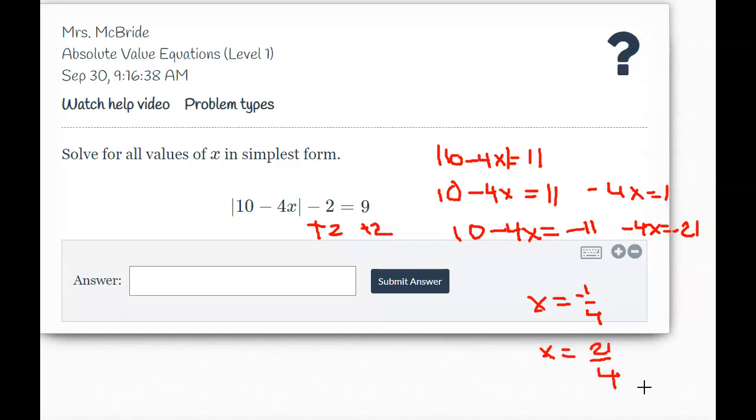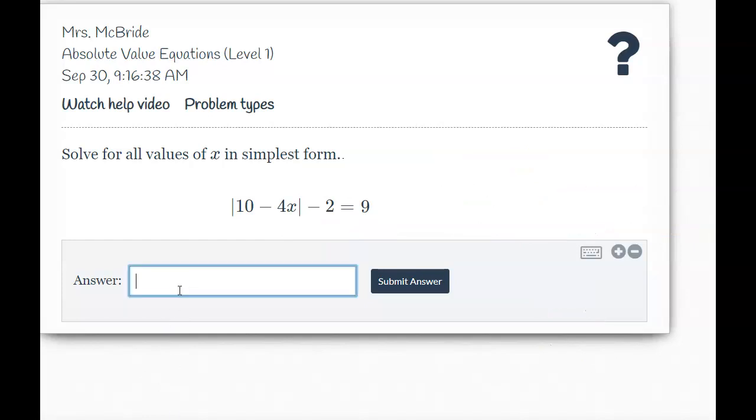So I'd quickly go back and just check these real quick to make sure I get an answer that works. So absolute value of 10 minus 4 times negative 1 fourth becomes 10 minus a minus, so they turn to a positive. The 4s cancel. You get a 1. So you get the absolute value of 11. So you get 11 minus 2 gives 9. So I know that negative 1 fourth is going to work.